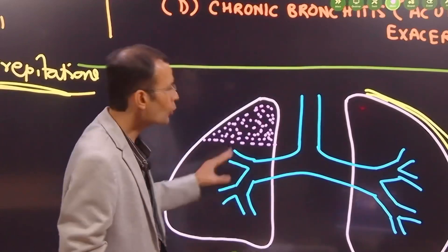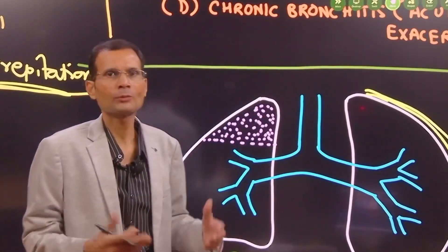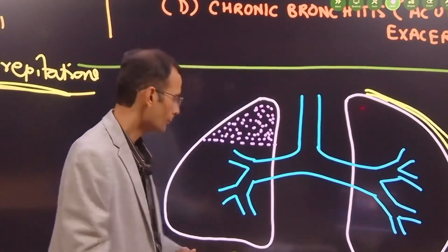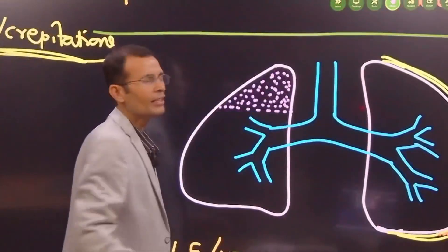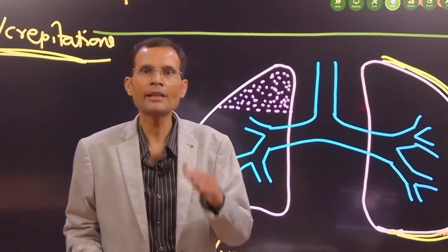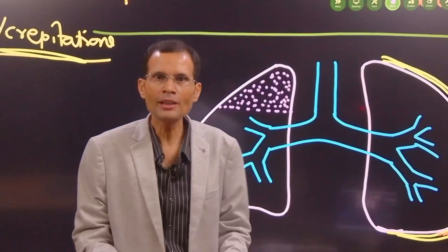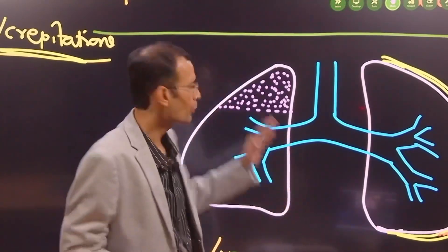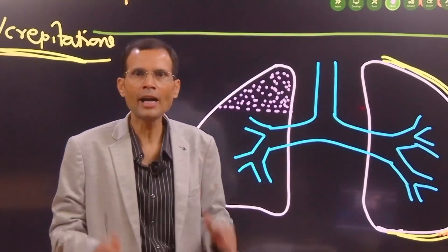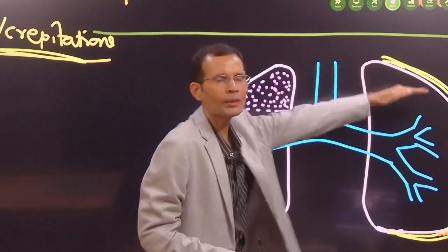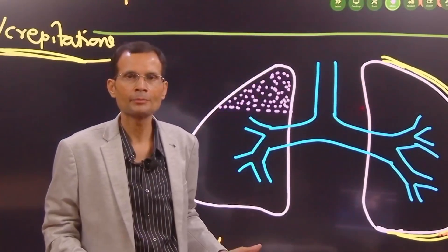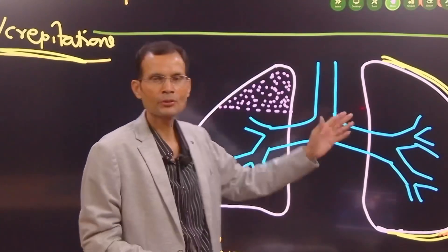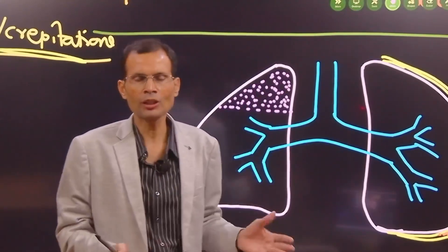One, nine. So we ask the patient to say one-one-one or nine-nine-nine - that's point number one. Now as we said that it's a comparative test. Normally, I mean when there is absolutely normal, both lungs are absolutely normal, in that case it will be equally felt on both sides, right? Both lungs absolutely normal, so tactile vocal fremitus or vocal resonance will be equal on both lungs.